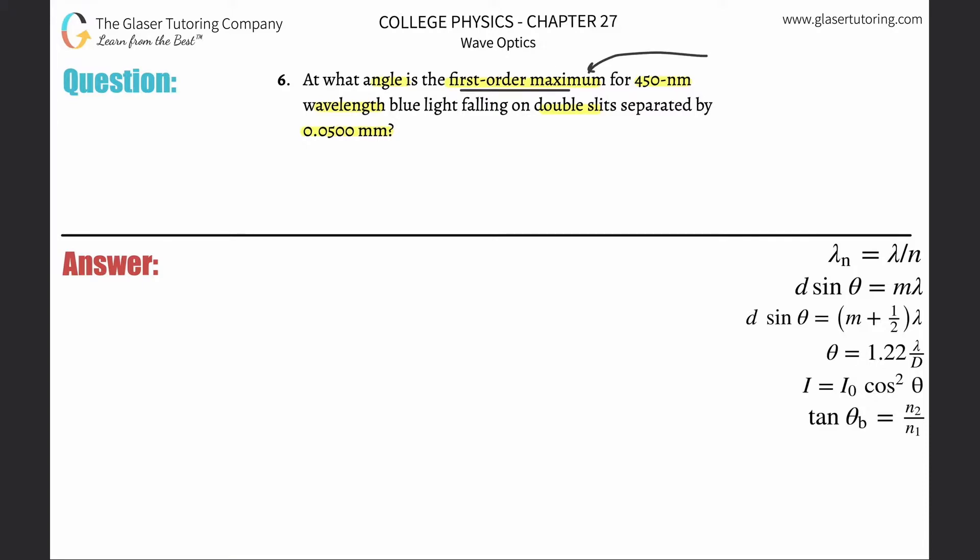This is for constructive interference, and the formula over here on the right hand side is for constructive interference. The one beneath it is destructive. So here we have d, which is the thickness or the distance between the double slits, multiplied by the sine of the angle that we're searching for, which will be equal to the order.